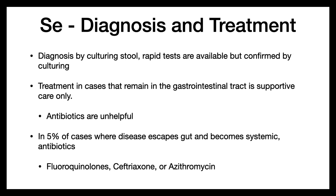Diagnosis of Salmonella enterica is by culturing stool. Rapid tests are available, but they are always confirmed by culturing. Treatment in cases that remain in the gastrointestinal tract is supportive care only — antibiotics do not help with recovery, so they're unnecessary. In the 5% of cases where disease escapes the gut and becomes systemic, antibiotics are warranted. Fluoroquinolones, ceftriaxone, or azithromycin are the most common antibiotics used; which one depends upon the resistance profile of the specific Salmonella enterica strain.